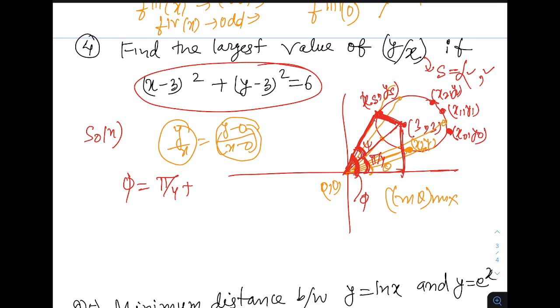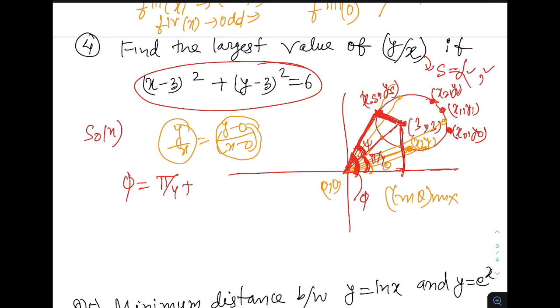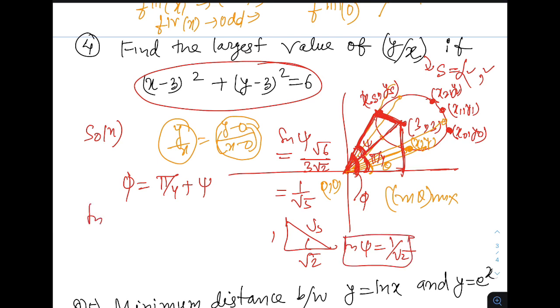Now tan psi is perpendicular by base but base is not known. In fact, we can calculate this base as well by root s1 property or we can indirectly find the value of psi by this radius. Sin psi is perpendicular by hypotenuse. So sin psi is that radius which is root 6 divided by 3 root 2 which is the distance of center from origin. So which gives us 1 by root 3. So sin psi once we know it is 1 by root 3, it is easy to check we can get tan psi. Tan psi will be 1 by root 2. So we have phi equal to pi by 4 plus psi such that tan psi is 1 by root 2. So we need to find tan phi which is tan pi by 4 plus tan psi by 1 minus tan pi by 4 tan psi equals 1 plus 1 by root 2 by 1 minus 1 by root 2. And that is going to give you root 2 plus 1 by root 2 minus 1. And that is our answer.